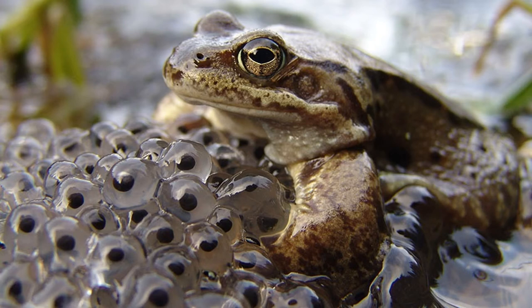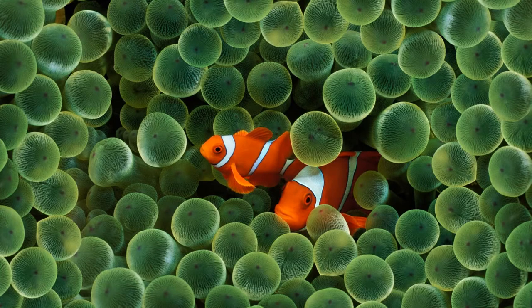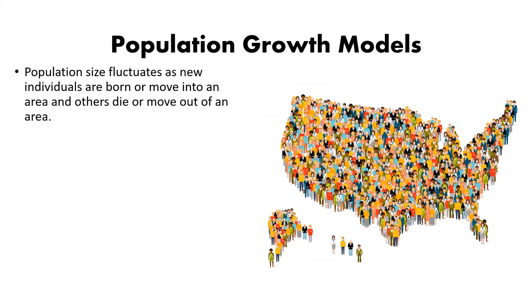Frogs are an example of opportunistic breeders — when conditions are good and there's plenty of water, they lay thousands of eggs. Very few of them survive, but producing so many increases the chance that a couple will reach the next generation. Fish are another great example of a Type 3 survivorship curve — lots of eggs and embryos, and very few survive to adulthood, just like in Finding Nemo.